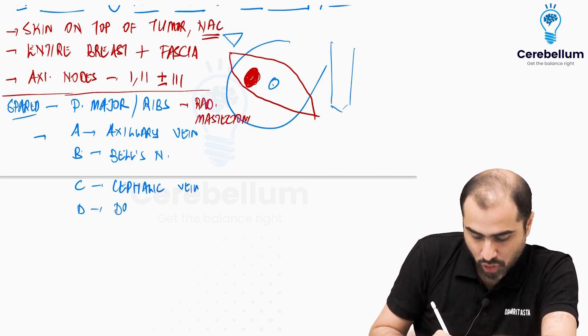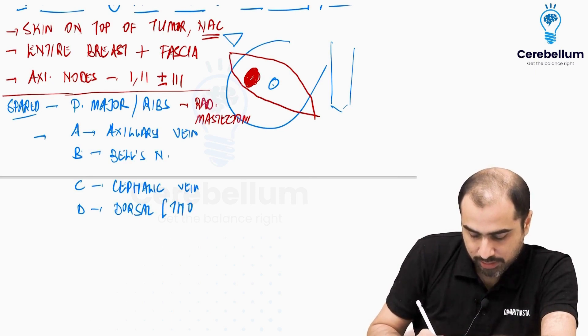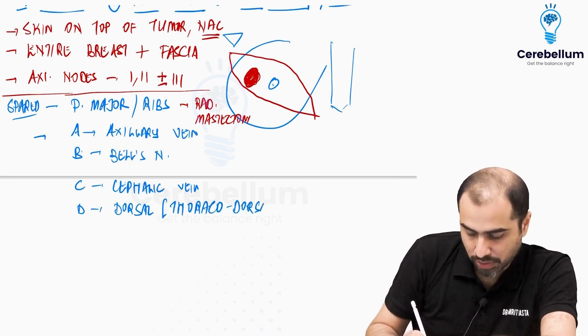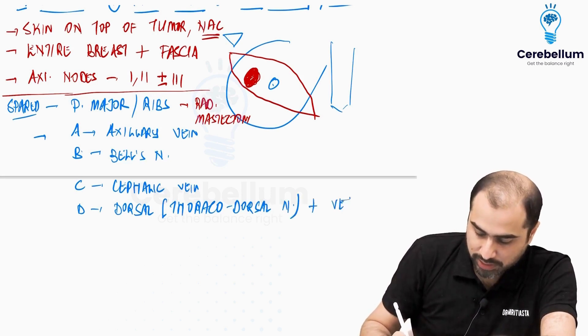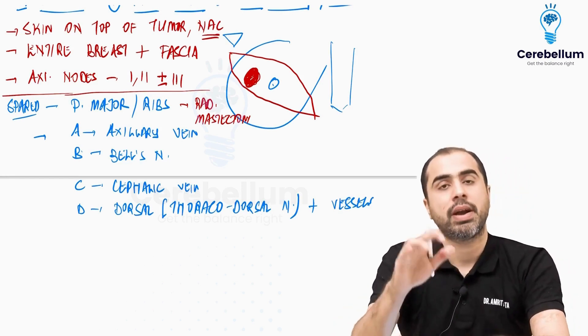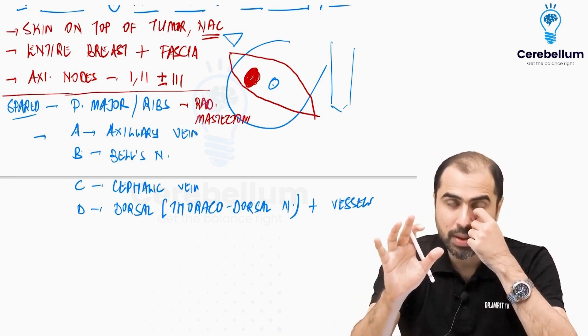And you will preserve dorsal or thoracodorsal nerve and vessels. So thoracodorsal nerve that goes to latissimus dorsi and the thoracodorsal vessels. These are what are going to be preserved in modified radical mastectomy. So this is about MRM. What all is removed?